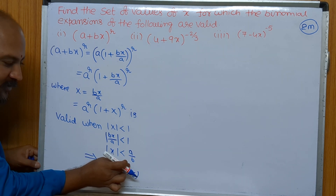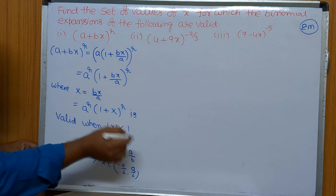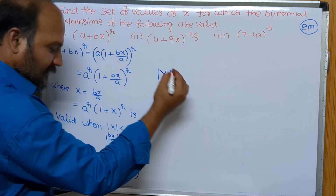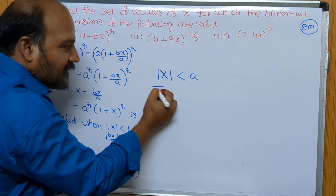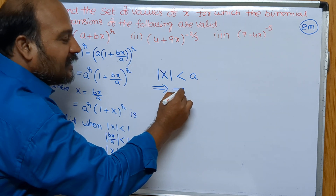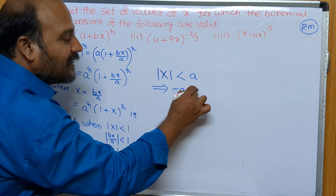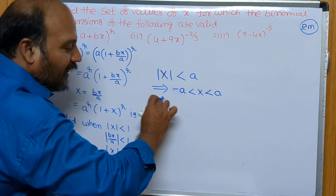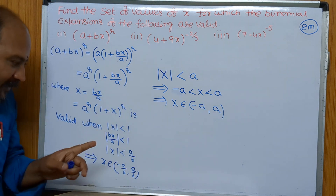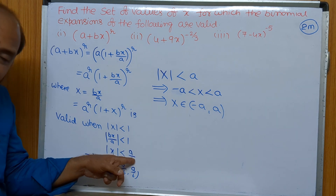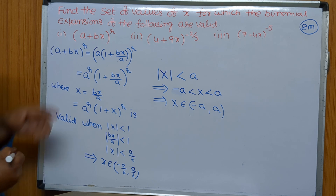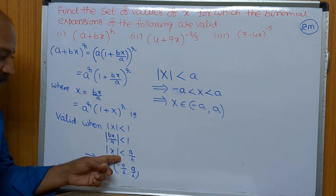So mod x less than a means plus or minus a comes, giving minus a less than x less than a, which can be written as x belongs to (−a, a). In this sum, mod x is less than a/b, so x belongs to (−a/b, a/b). Therefore this expansion is valid for x in the open interval (−a/b, a/b). That is the general method.